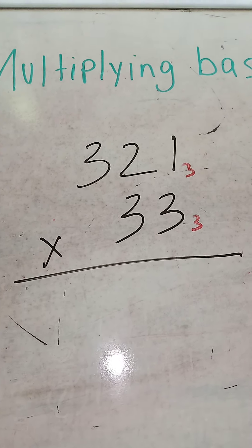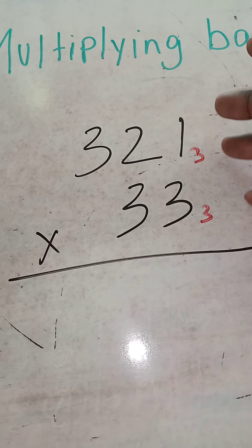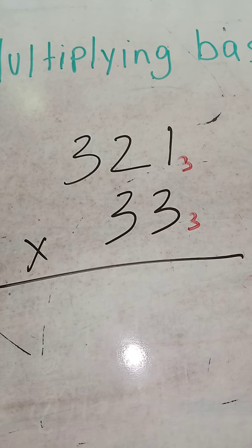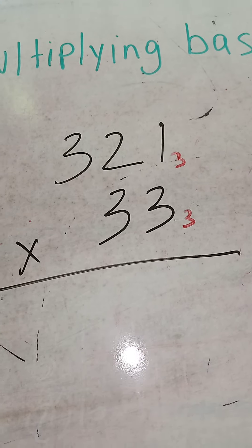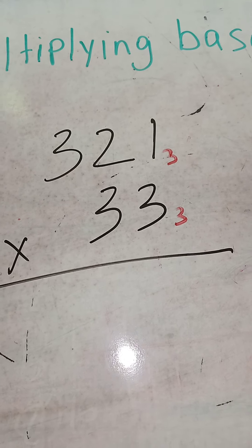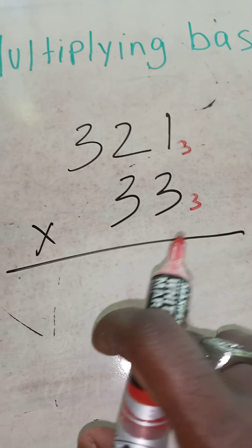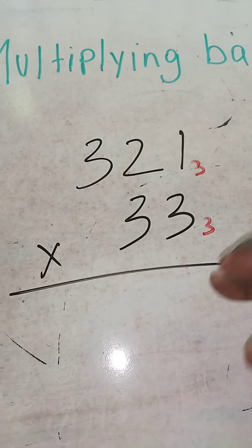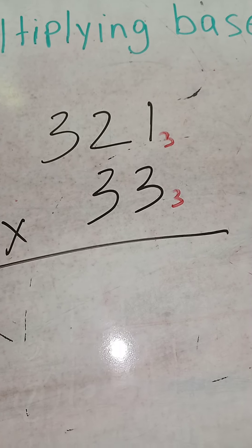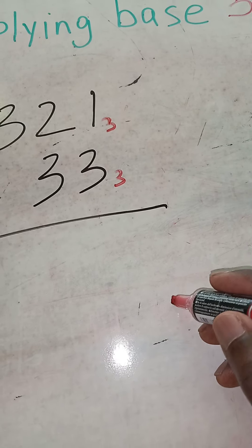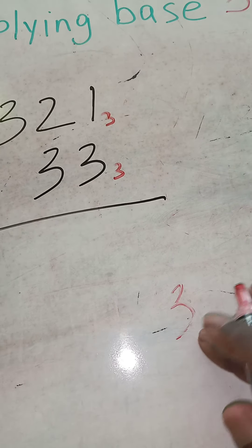We're using base 3. In base 3 you remember you cannot write 3 or any number above 3. The highest number you can write in base 3 would be 2, from 0 to 2. 3 in base 3 is 1-0 because 1 times 3 equals 3.